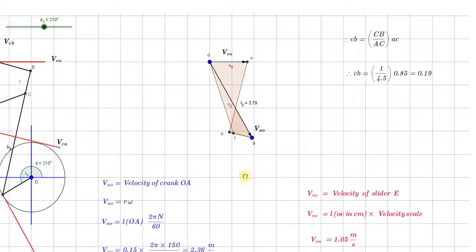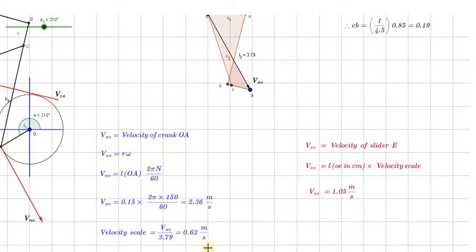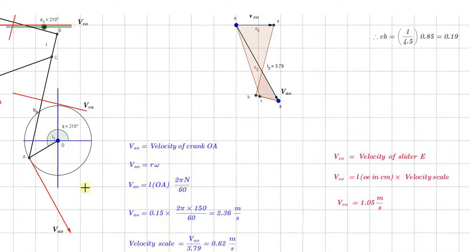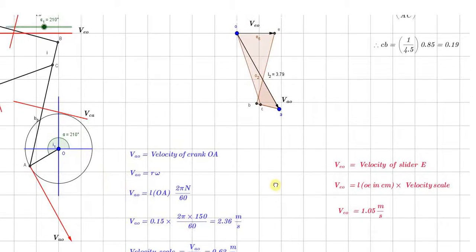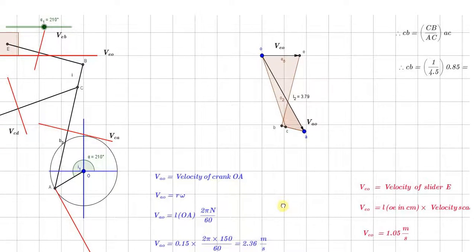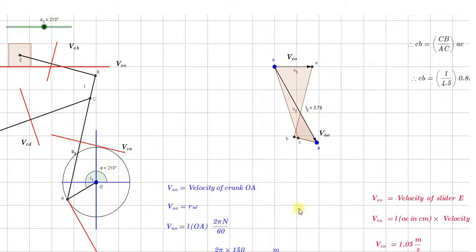We have to find out the velocity of this slider, VEO. We have already calculated the scale, so just measure the length OE in centimeters and multiply by the scale. You will get the value equal to 1.05 meter per second. At this particular instant, when the crank is making an angle of 210 degrees from the positive x-axis, the velocity of the slider is 1.05 meter per second, or approximately 1 meter per second. This is the mechanism for which we can draw the velocity diagram as shown.